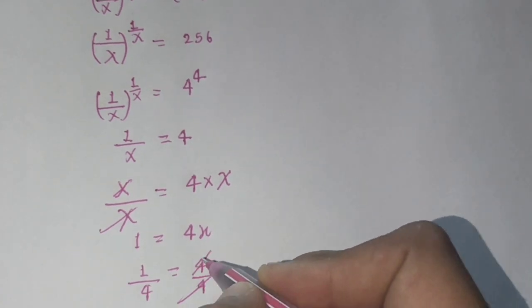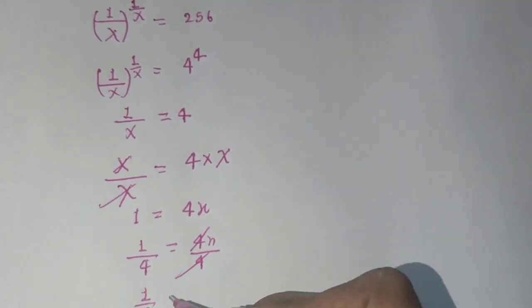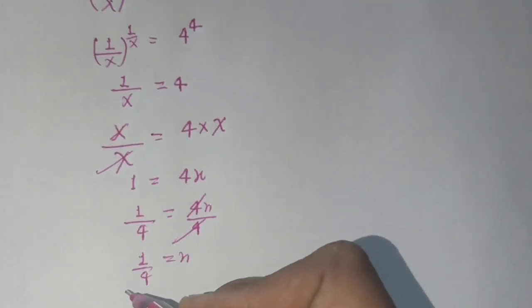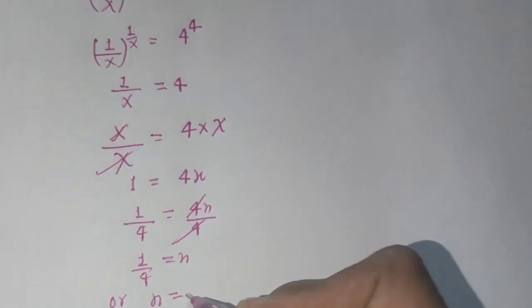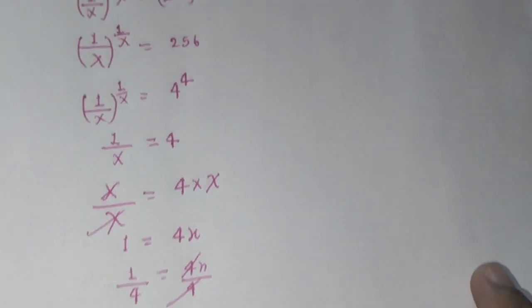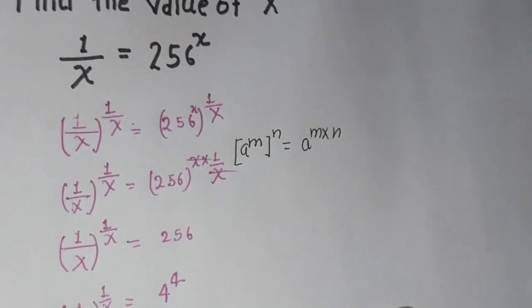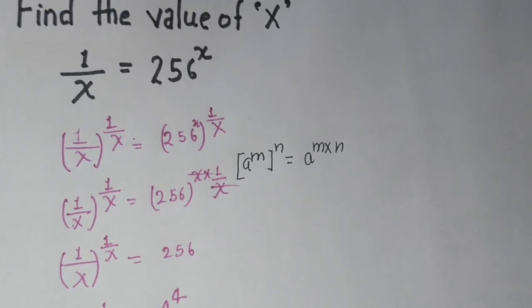This 4 and 4 cancel. 1 by 4 equals x. Yeah, x equals 1 by 4. This is the answer to this question - 1 by 4 is the answer. Bye.